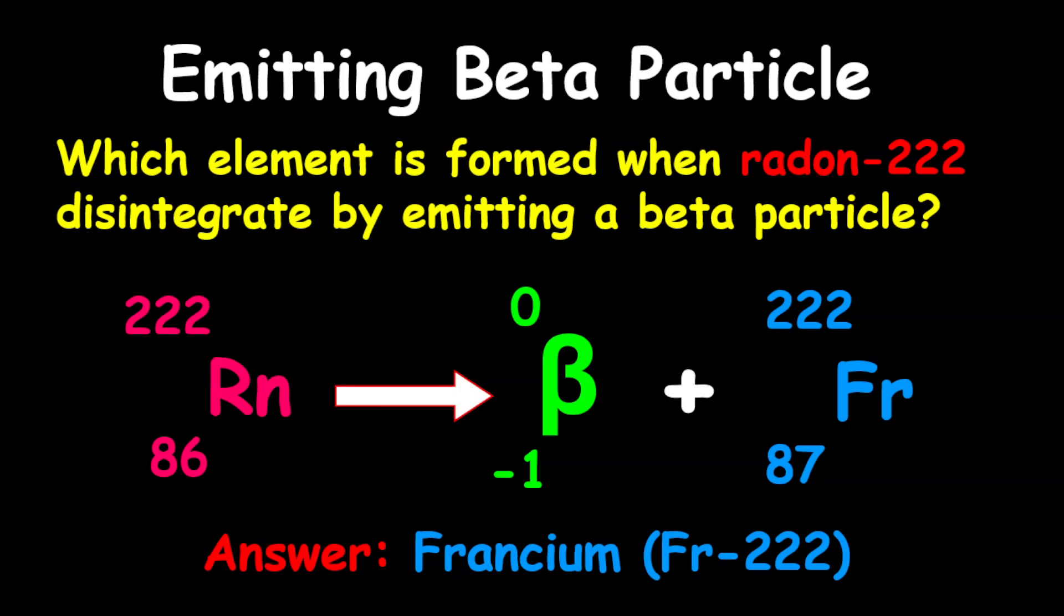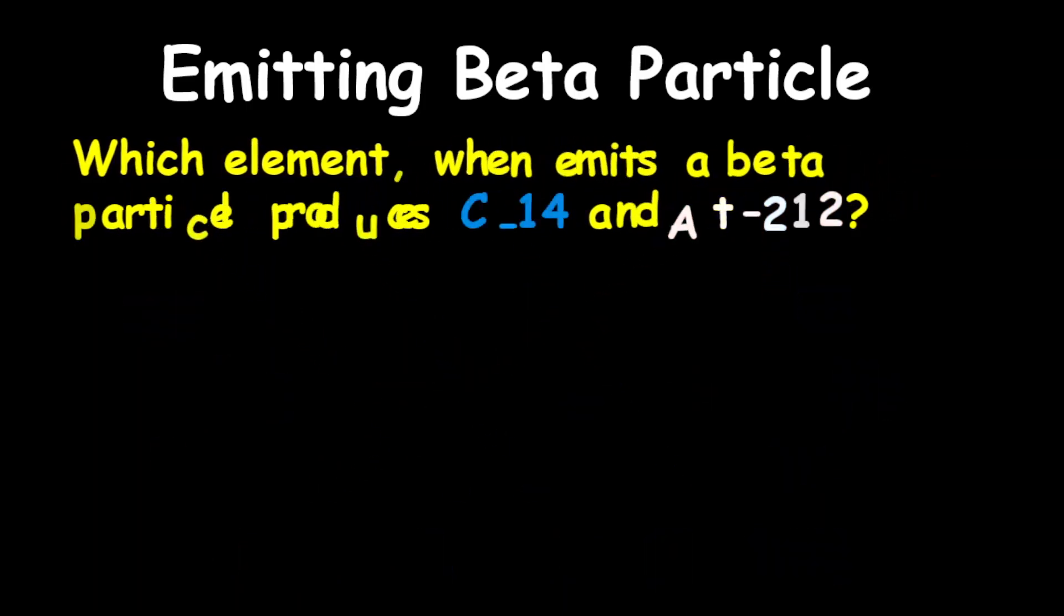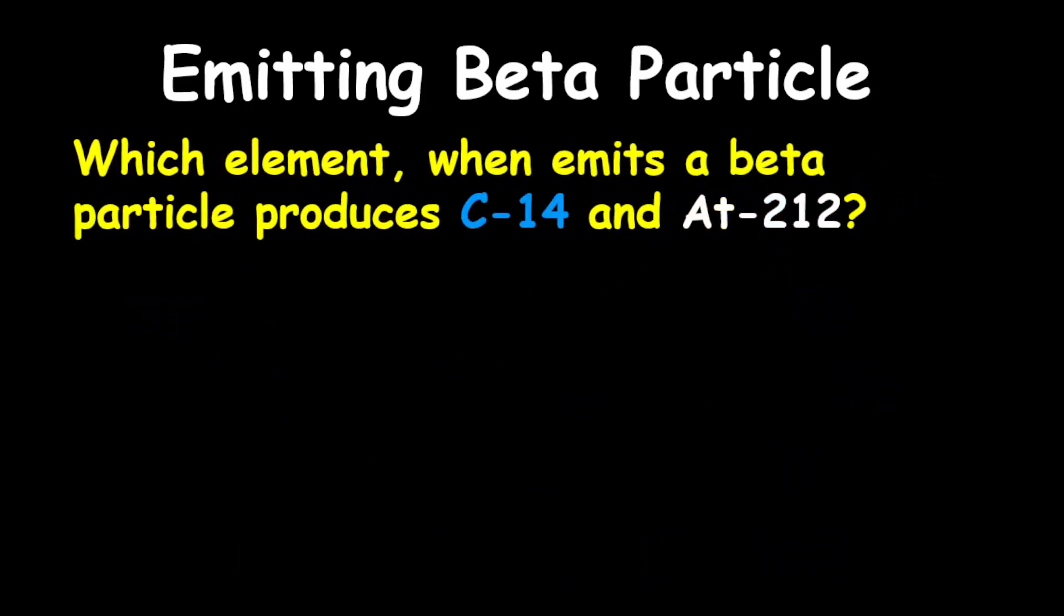Now for our next example, the question reads: which element when emits a beta particle produces carbon-14 and astatine-212? Now remember, based on the question, these are products. So therefore, we're going to represent our beta particle...